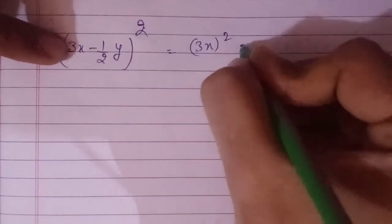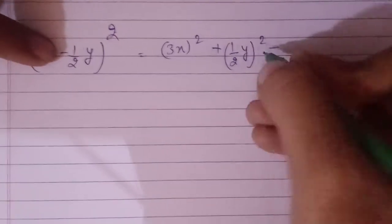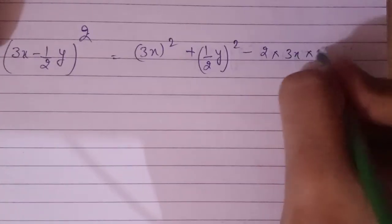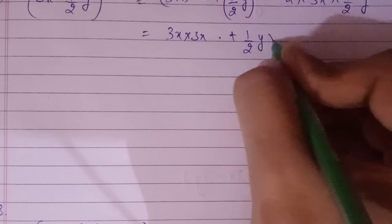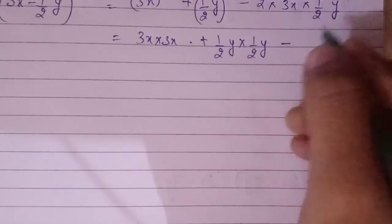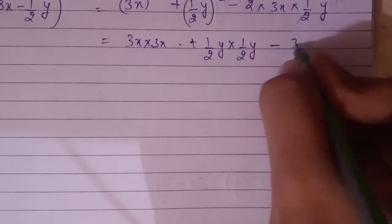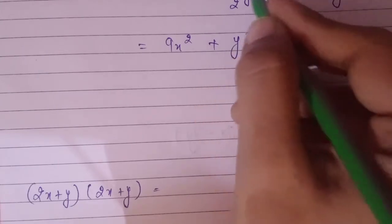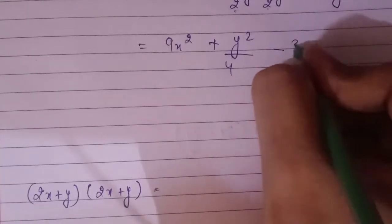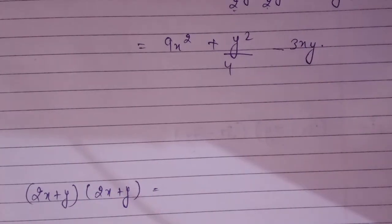Now let's do the last part of this question: (3x - 1/2y)². Again (a-b)² where a = 3x and b = 1/2y. So it will be (3x)² + (1/2y)² - 2×3x×(1/2y). That gives 9x² + y²/4 - 3xy. This will be the final answer.